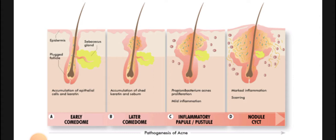Because in puberty, there are hormonal changes, and mostly the hormone involved is androgen. When there are more androgens in the body, the sebaceous glands will release more sebum. If sebaceous glands produce a lot of sebum, the excess production will cause blockage.